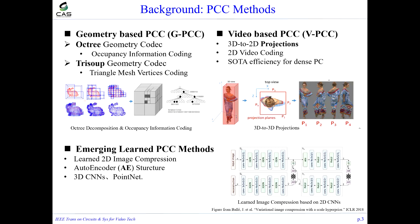Different from GPCC, VPCC projects 3D objects into different 2D planes and leverages image codecs to compress them. By far, VPCC has achieved state-of-the-art coding efficiency for dense point clouds.